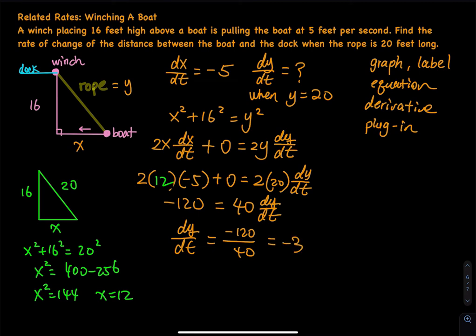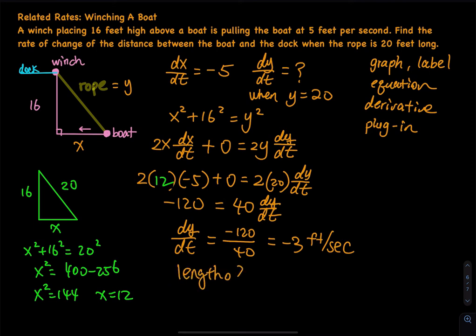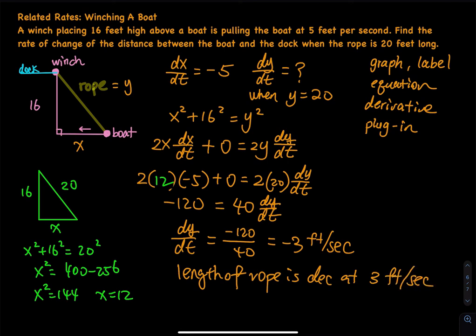What is the unit? Y represents the length of the rope, so the unit is feet per second — negative 3 feet per second. Can rate of change be negative? Yes. When the rate of change is negative, that means the length of the rope is decreasing. So the length of the rope is decreasing at 3 feet per second.